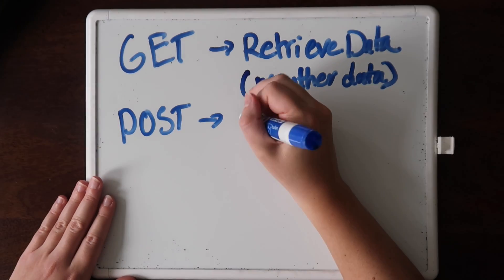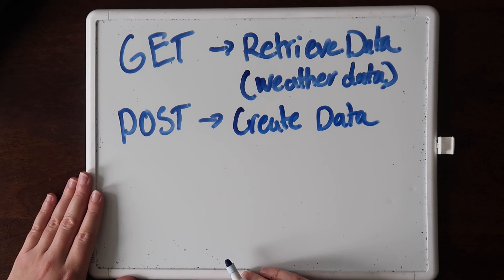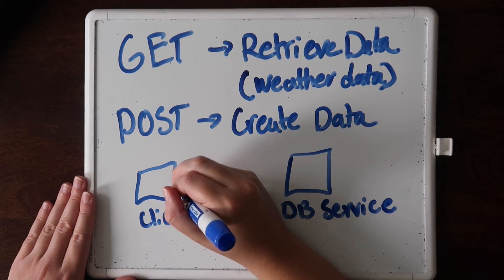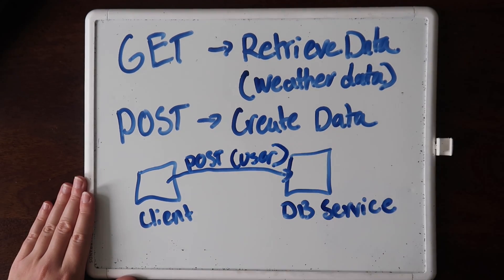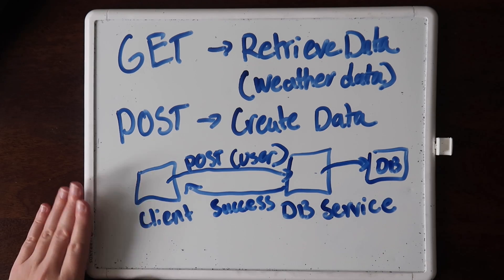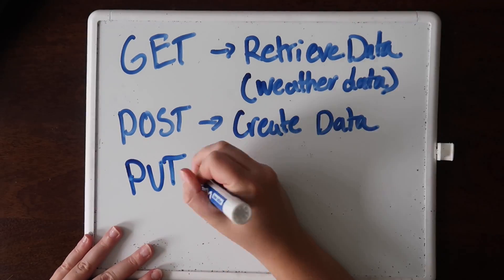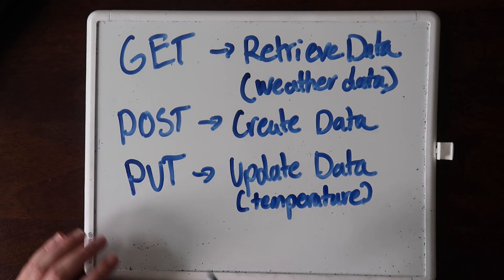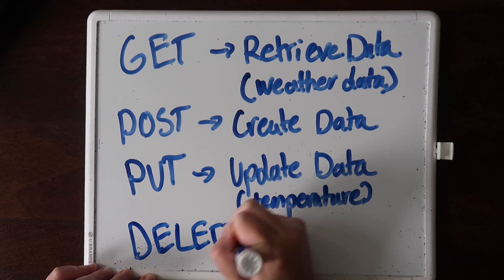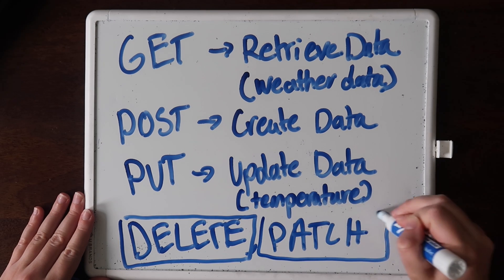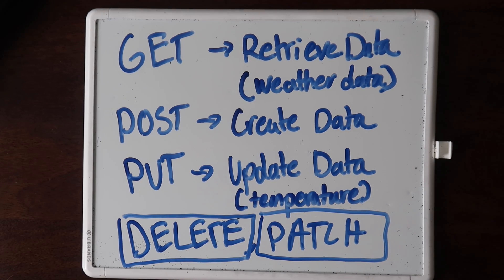There's also POST. When POST is used, typically it's about creating a new resource. For example, one software service might send a POST request to a database service to add data to the database, with all the data needed to add an entry. The second service would create the entry and send back a successful response. PUT is similar to POST, but it has to do with updating an existing piece of data. Two other methods are DELETE and PATCH: DELETE requests another service to remove a piece of data, and PATCH is where partial modifications are made to a resource — different from PUT, which updates the entire resource.